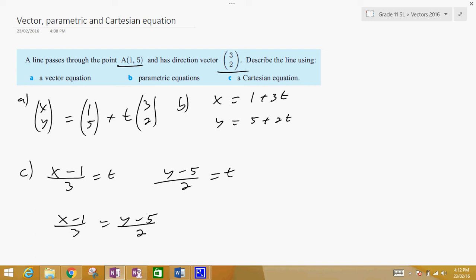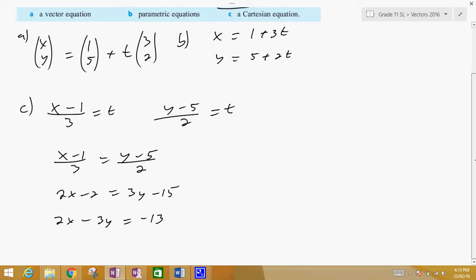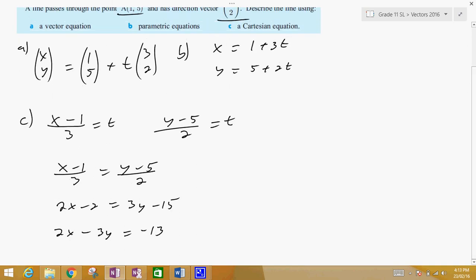Now we can change it into different kinds of forms. I guess I can put it into the standard form. So I'm going to multiply everything by 6, or maybe I'll just cross-multiply it. So I'll cross-multiply it. So 2x minus 2 is equal to 3y minus 15, and then I get 2x minus 3y is equal to minus 13. And now we've got it in Cartesian form, and this is your Cartesian equation.